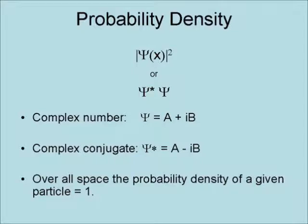and the complex conjugate, Psi star, equals A minus iB. Over all of space, the probability density of a given particle equals 1.